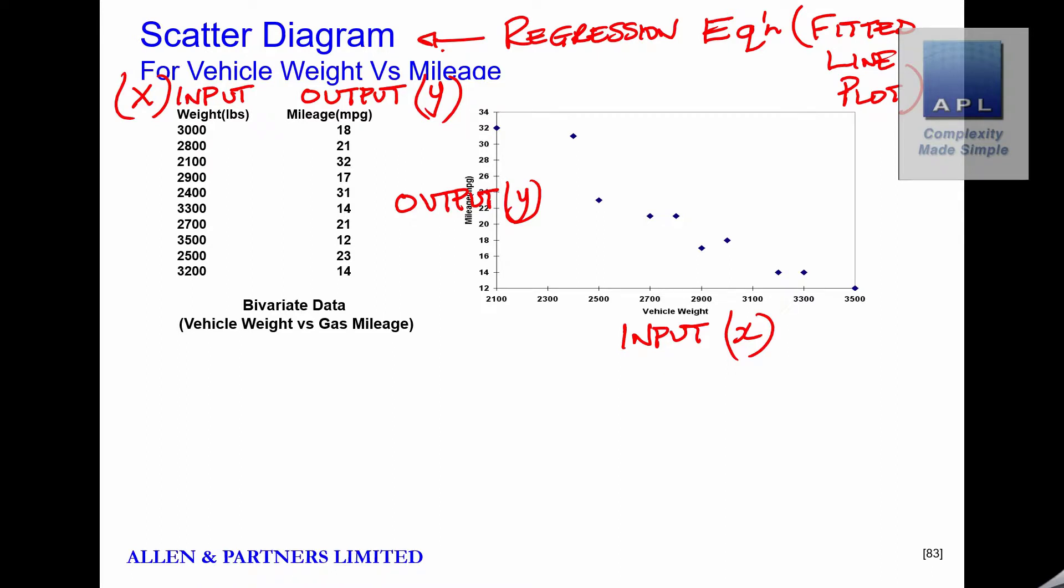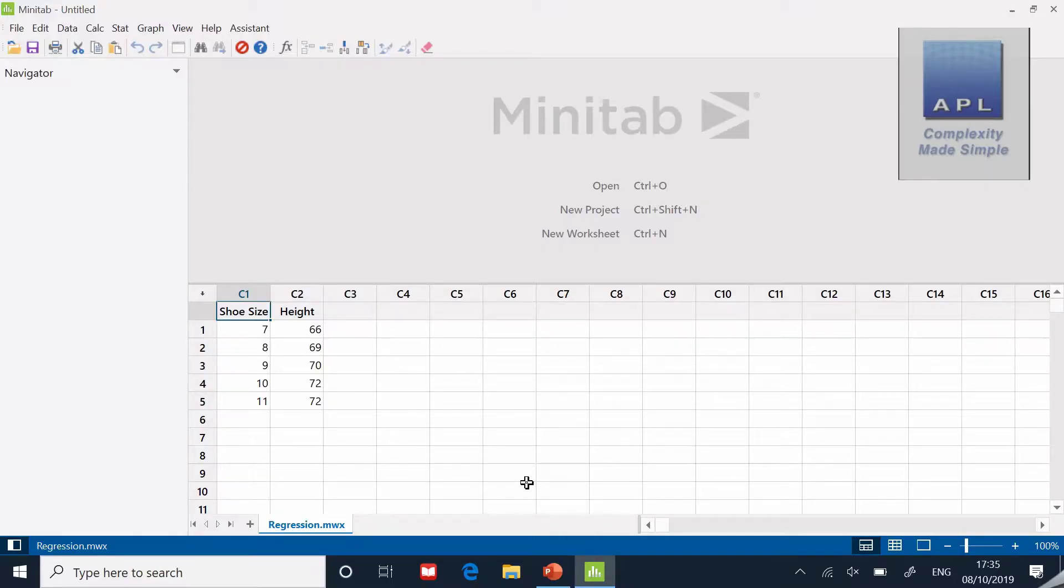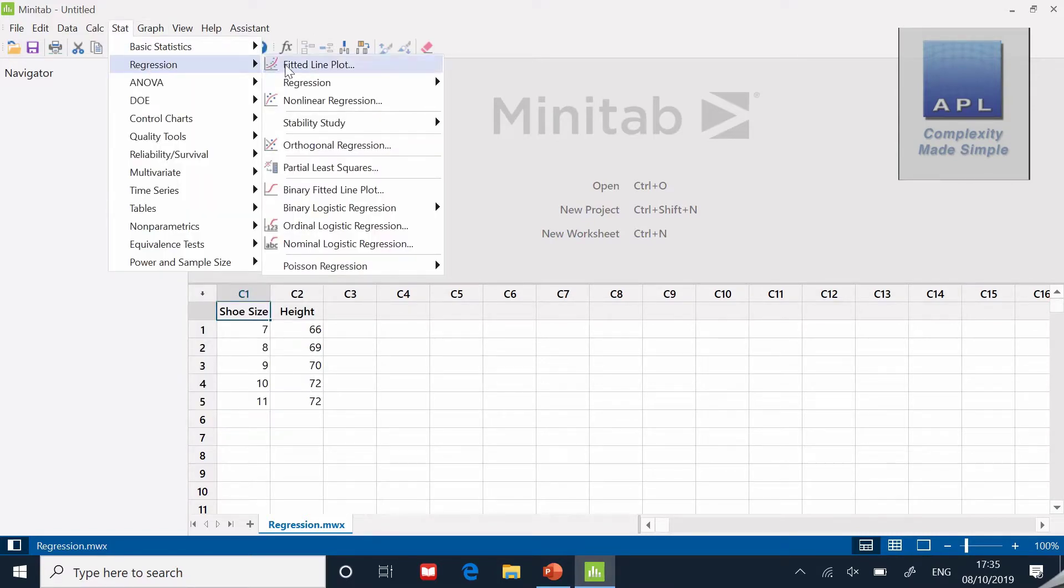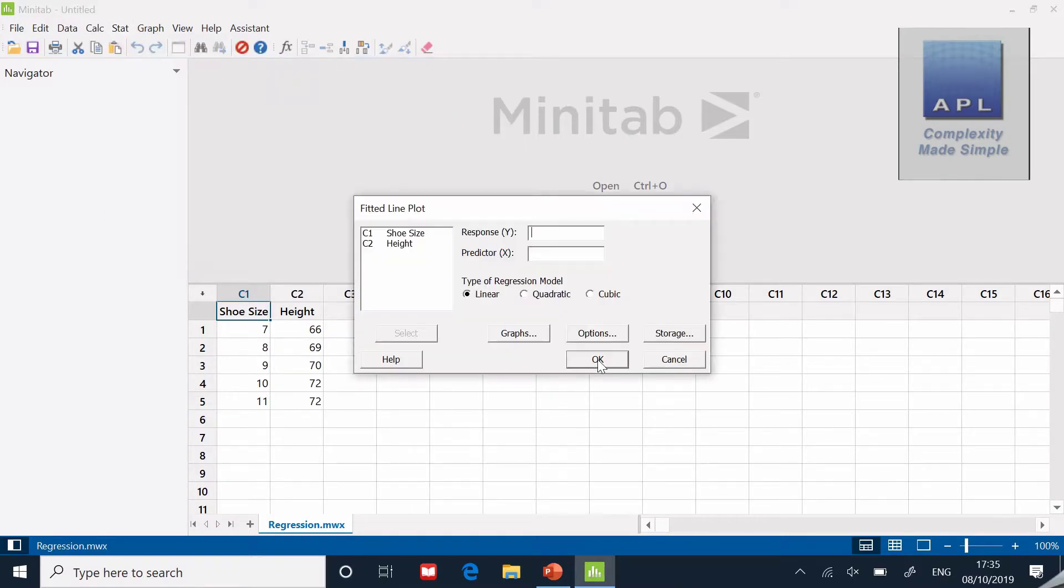It will ask us for the X data and the Y data in the software. So let's go to Minitab and take a look at the fitted line plot. Here we are in Minitab—I've got some very simple data: shoe size versus someone's height in inches. I'm just going to go up to Stat, Graph, Regression, and the fitted line plot is the first one.